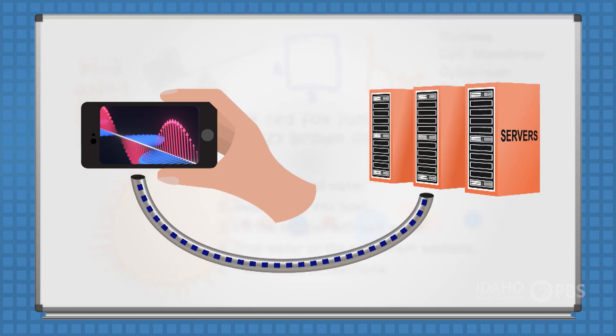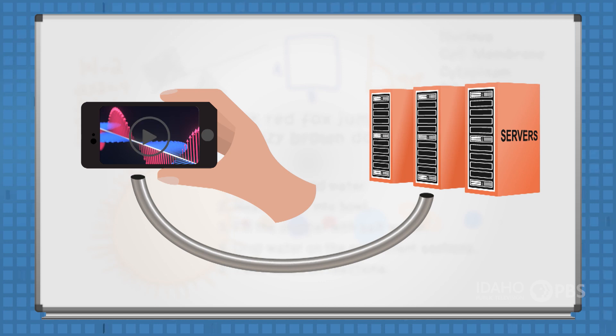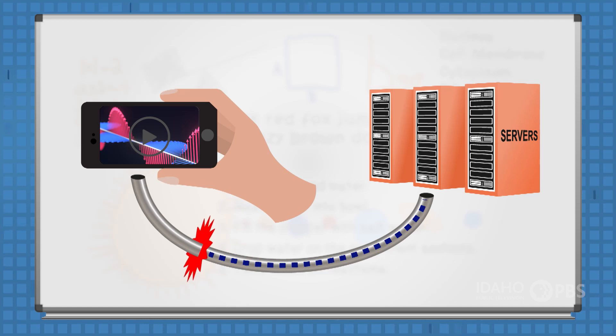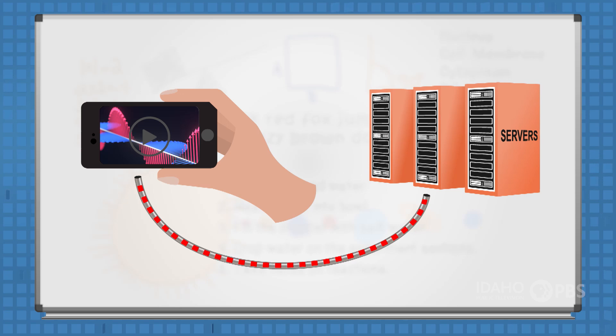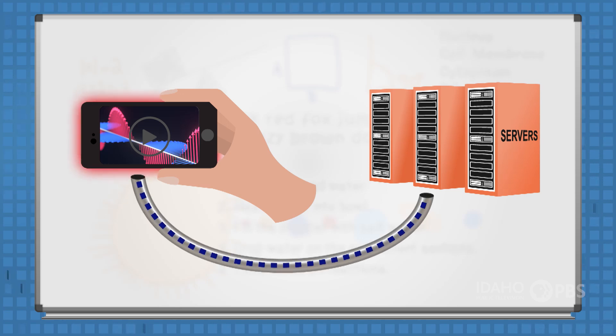"Okay, then why does the video sometimes stop and I get that circle thing?" Well, when the video stops, there can be a problem — at the provider's server where the data is not getting out, or the pipe from the provider is clogged and too much data is being sent, or the pipe from your device isn't big enough to get all the data at once, or your device isn't processing the data right. Your device is set to buffer — it'll wait, it's effectively a pause for your device to retrieve the rest of the information it's waiting for.